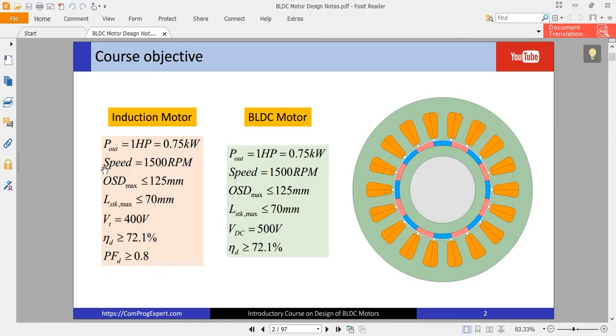This is the synchronous speed and the outer stator diameter stack length. This is the core length. Stator core and rotor core should be lower than 70 mm, line-to-line voltage, efficiency, and power factor. These are properties of the benchmark induction motor.